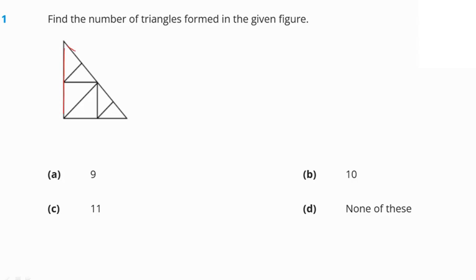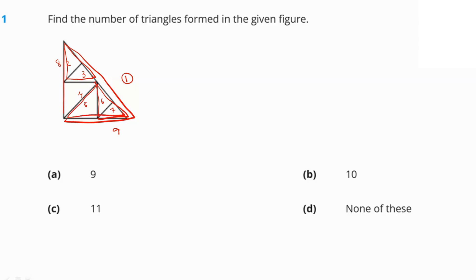This is the bigger triangle, so this is triangle number 1. Then we have 2, 3, 4, 5, 6, and 7. Then we have one whole big triangle over here — the 8th triangle. Another whole big triangle here — the 9th triangle. Another whole big triangle including 5, 6, and 7 — the 10th triangle.